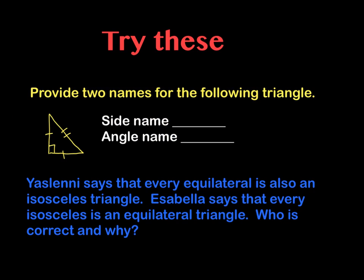So now it's your turn to try a few. So I'd like you to try these. I would like you to provide two names for the following triangle. So with this triangle, I would like you to mention its side name. So based on its sides, what type of triangle is it? And based on its angles, what name would we give this triangle?